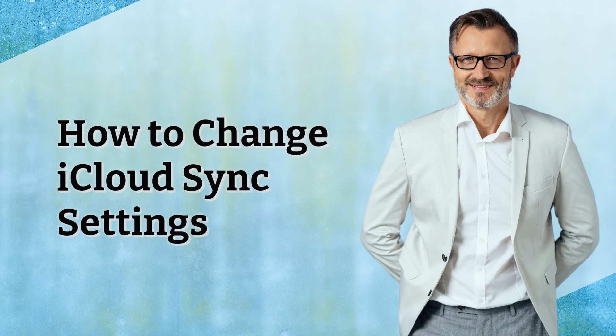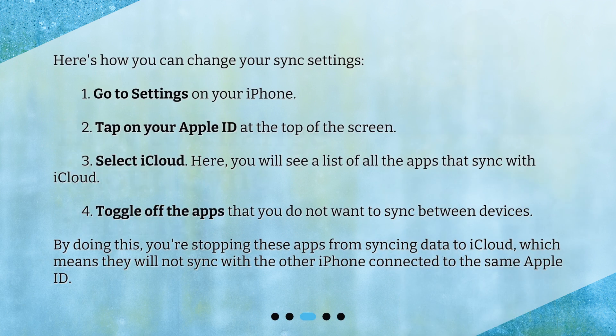How to change iCloud sync settings. Here's how you can change your sync settings. First, go to Settings on your iPhone. Then tap on your Apple ID at the top of the screen. Select iCloud. Here you will see a list of all the apps that sync with iCloud. Toggle off the apps that you do not want to sync between devices. By doing this, you're stopping these apps from syncing data to iCloud, which means they will not sync with the other iPhone connected to the same Apple ID.